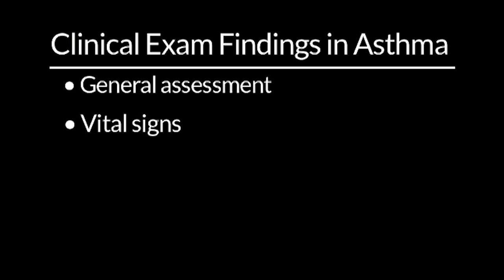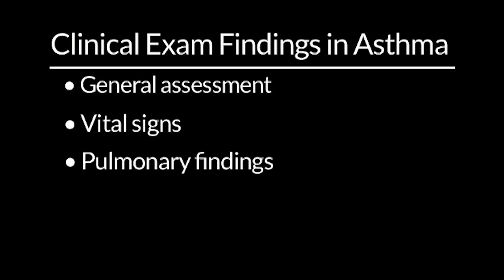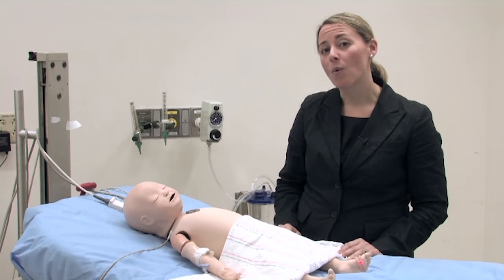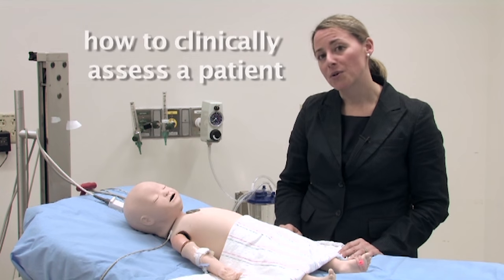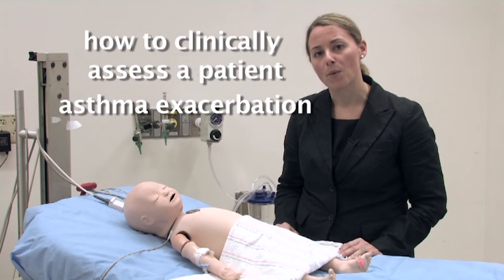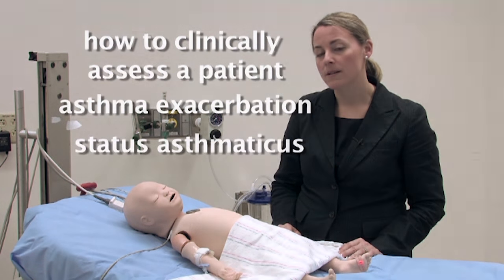We will be looking at the vital signs of a patient with an asthma exacerbation or with status asthmaticus. We'll discuss the pulmonary or lung exam findings that you might notice in a patient with asthma, as well as some of the other cardiovascular signs and symptoms. I'll be explaining one way of how to clinically assess a patient with asthma exacerbation or status asthmaticus.